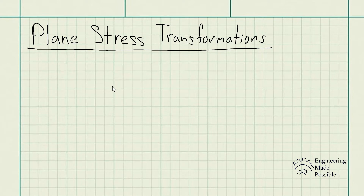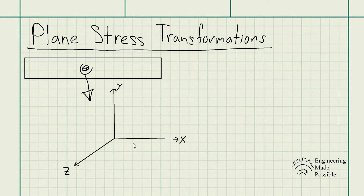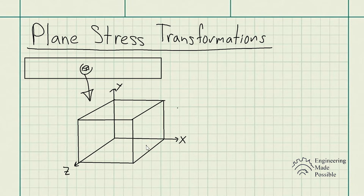Let's draw an object experiencing some sort of loading — say a rod or a beam with external loads. We look at a small finite element within this object and analyze it. Here is the 3D coordinate system I'll be using, and here is this 3D finite element. What's left are the stress components: the normal stress components on each face of this cube, as well as the shear stresses.